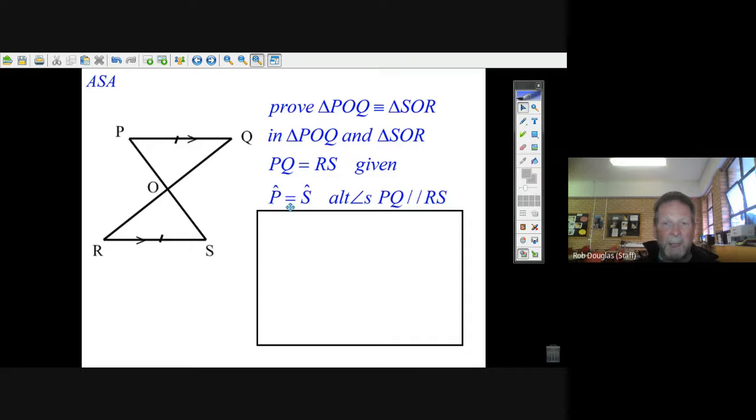angles. And the reason we could do it is because it was given that PQ is parallel to RS. Well, we've got an angle there now. Hey, but we can get at this Q—I see a Z there